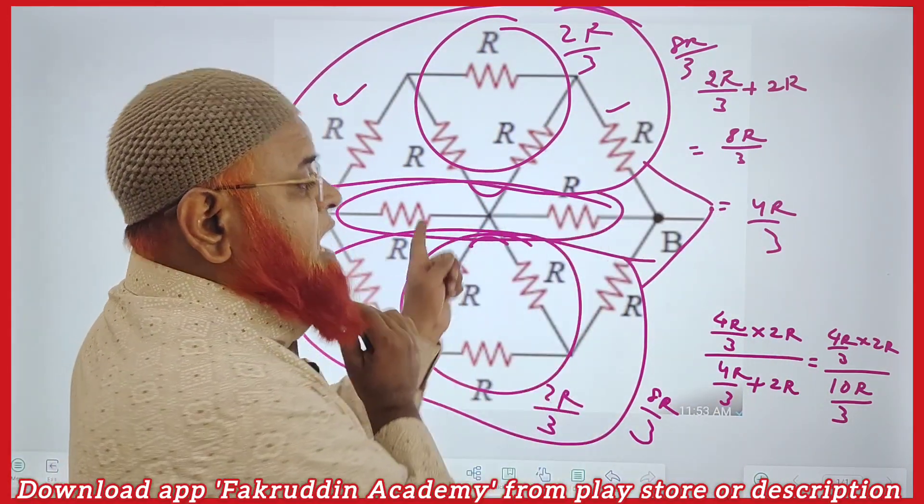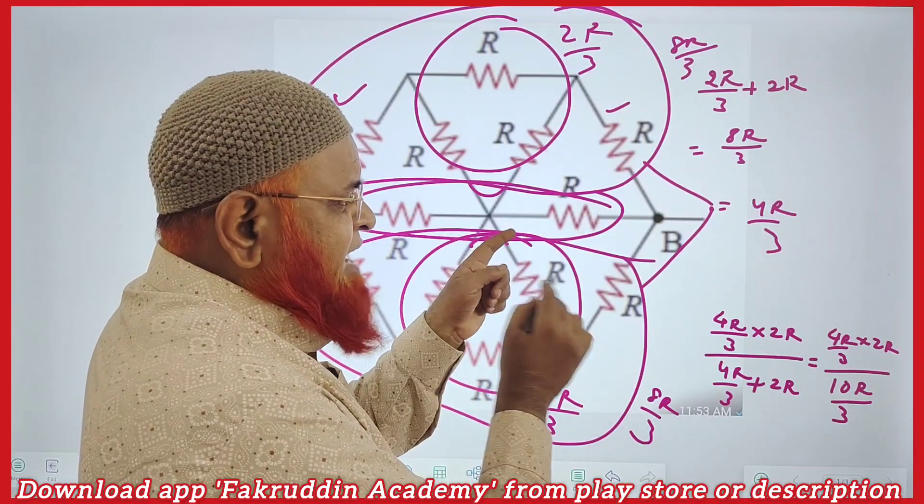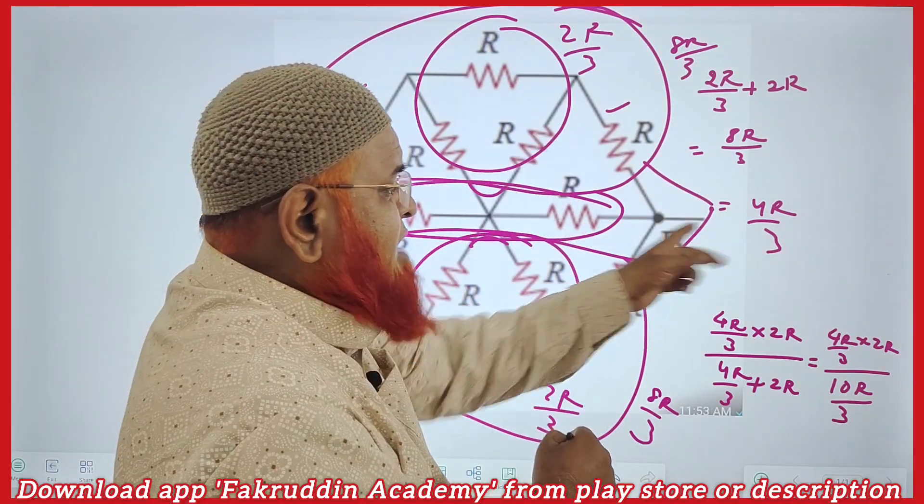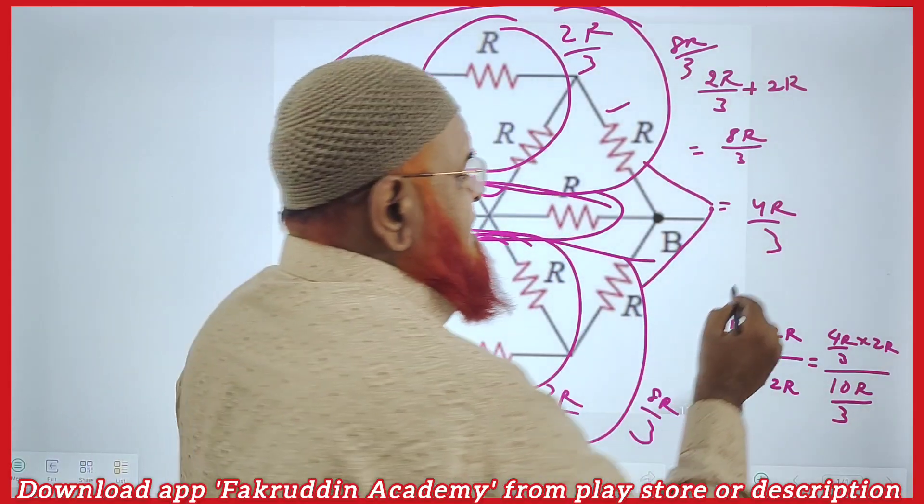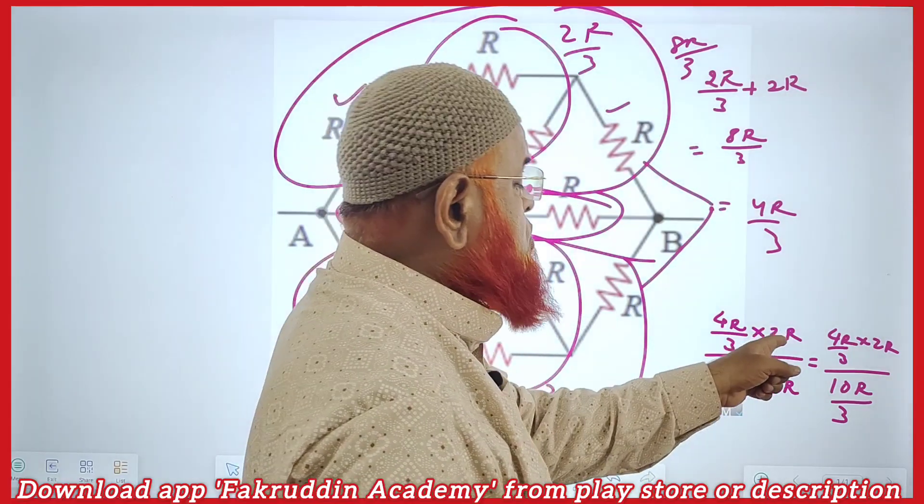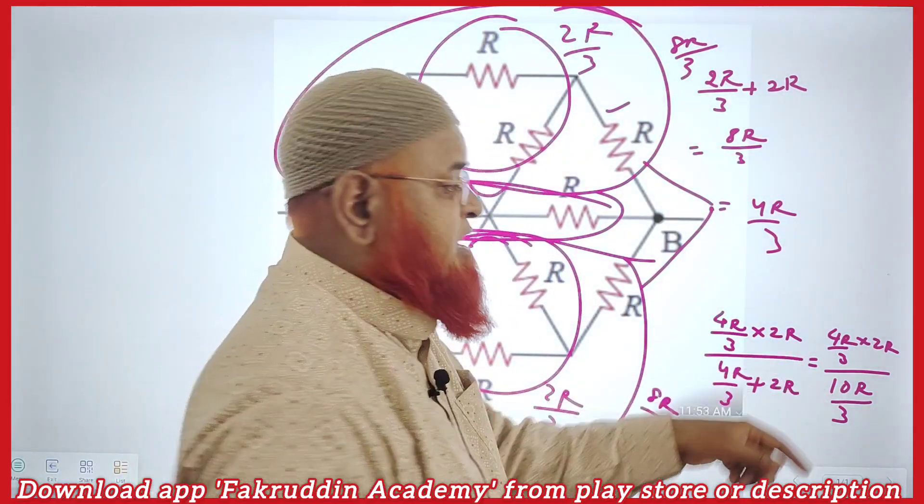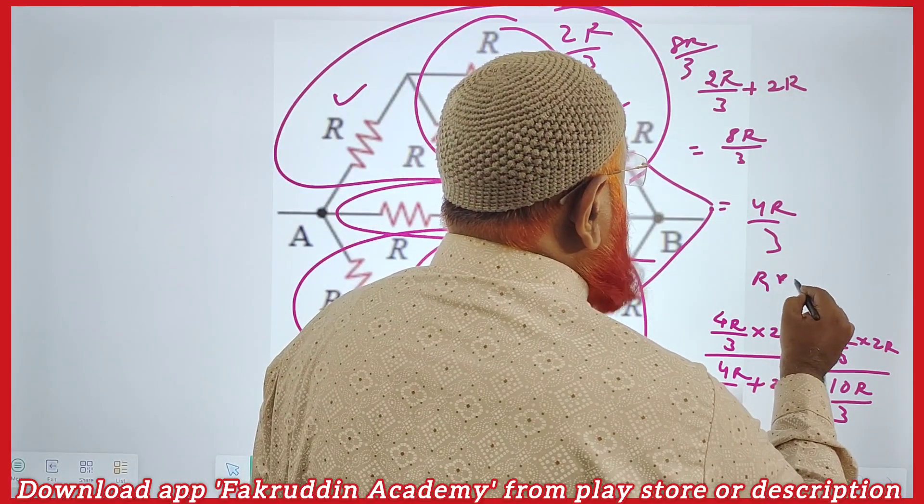in the middle there is again 2R. So 2R and what is their parallel? 4R by 3 and this 2R are parallel, so 4R by 3 into 2R by 4R by 3 plus 2R. This is because R1